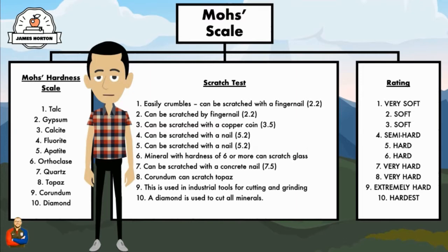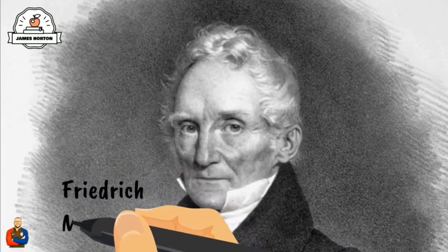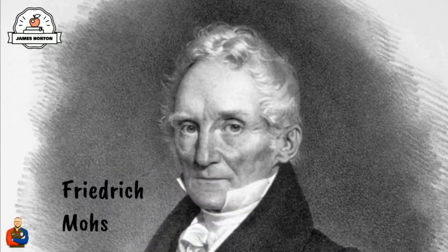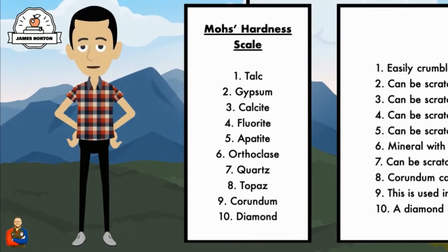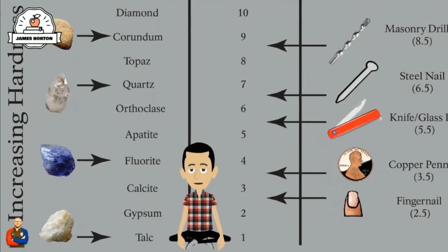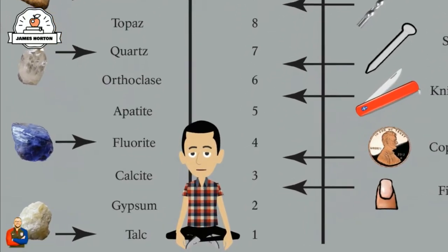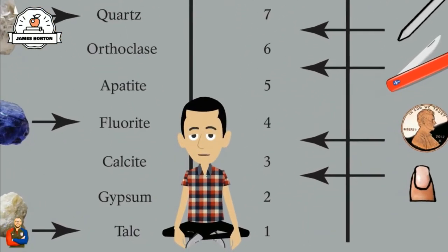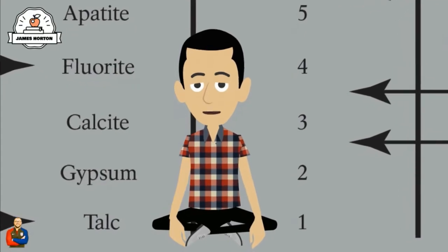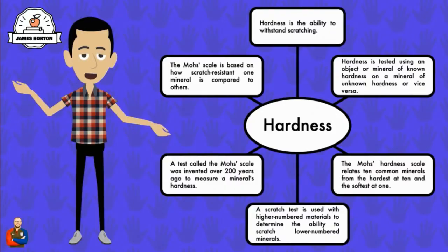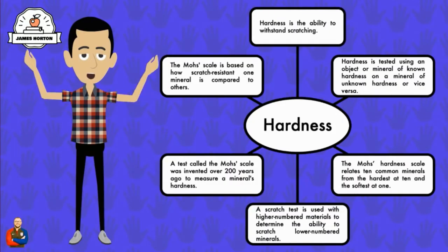Thanks to this German mineralogist Frederick Mohs, we can identify minerals by their hardness. Mohs' scale of hardness grades minerals from 1 to 10. A mineral with a higher grade scratches those with a lower grade. Talc is a mineral that is the softest mineral, and it is identified with a 1.